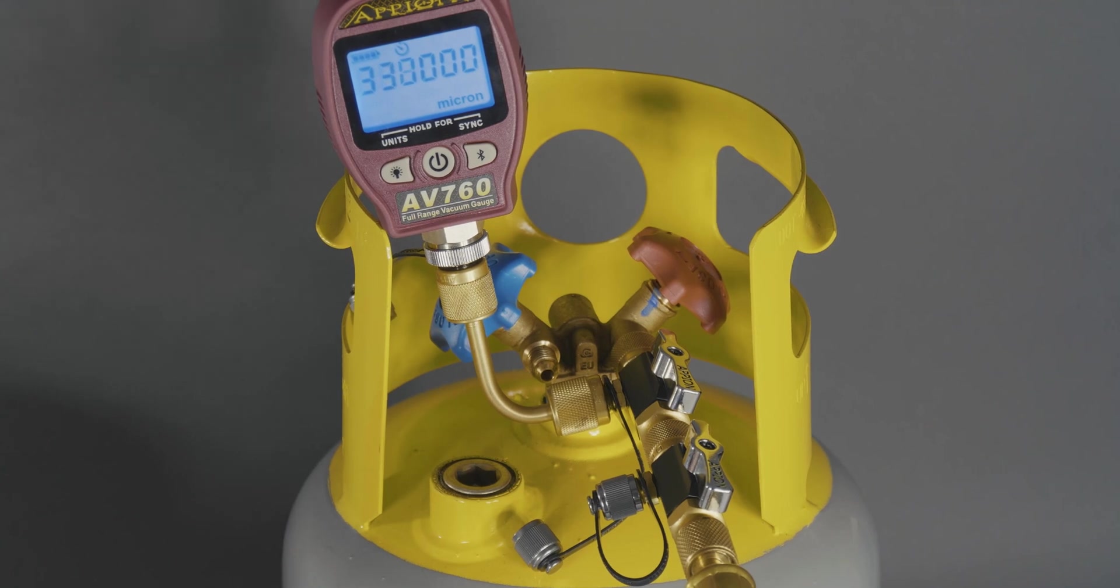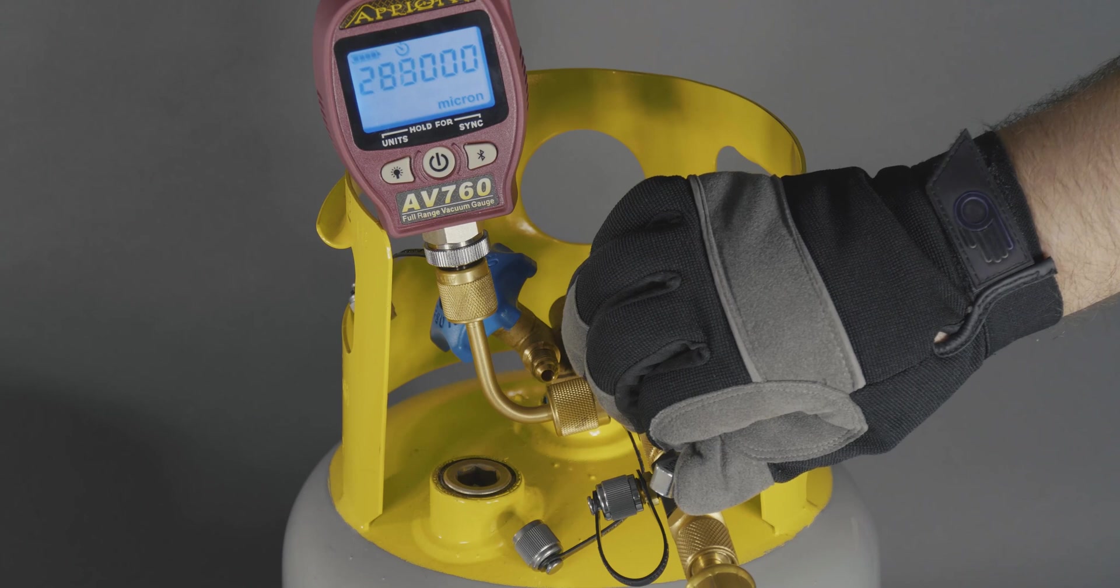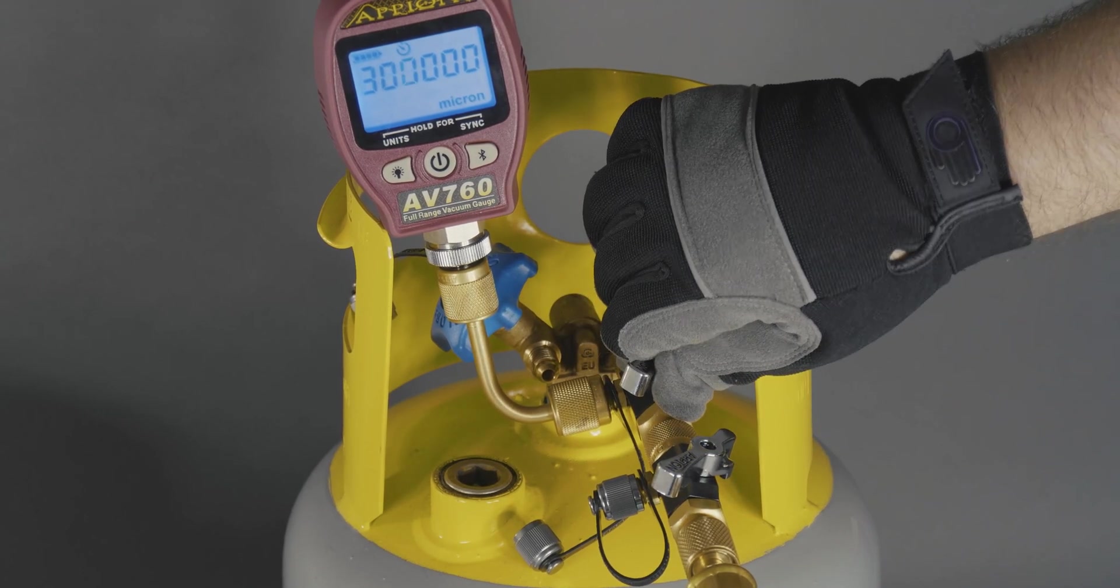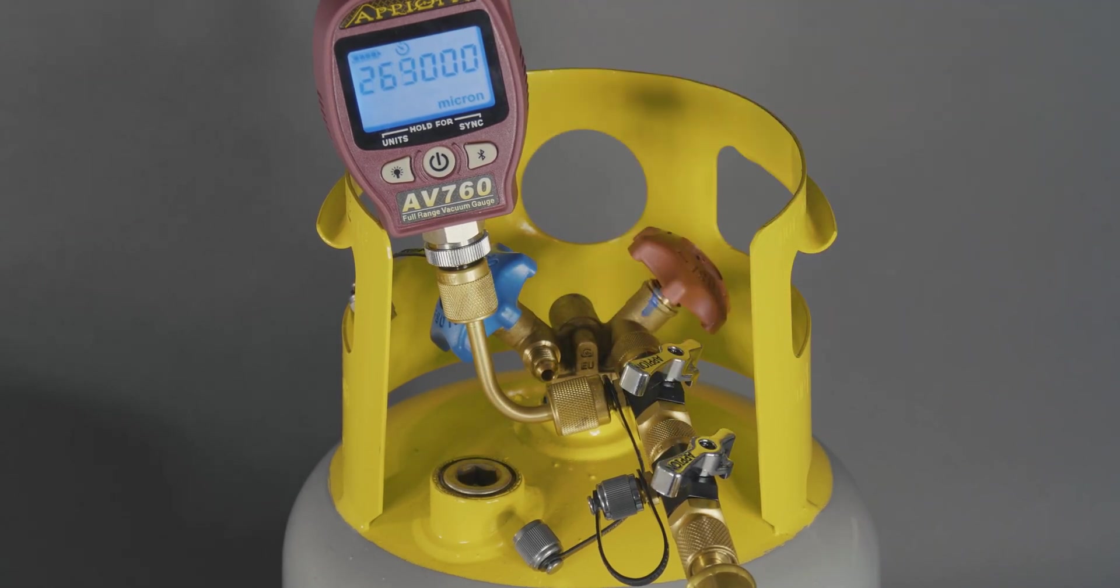As the pump begins pulling the cylinder down, open each of the core tool valves to a 45 degree angle. This will help prevent pockets of air within the tool from not being evacuated. Let the gauge pull down to 200 microns.